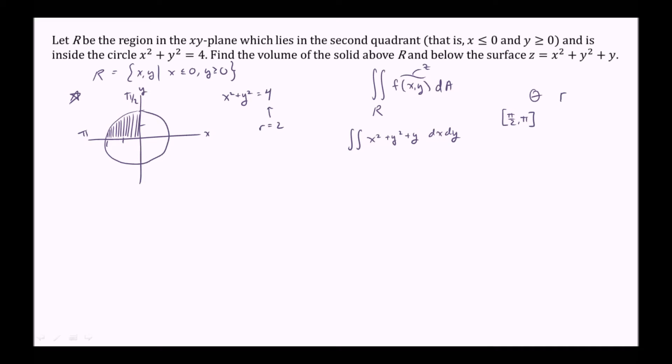And r, the smallest r is 0, and the largest r ever is 2. But now that we have correct bounds in polar notation, we have to replace the function and dx dy with polar notation as well.